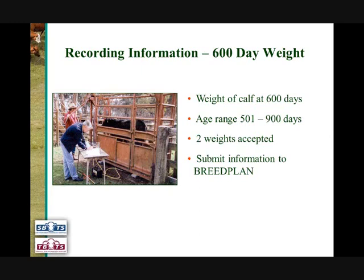While ideally one 600 day weight would be perfectly adequate, in some cases seed stock producers may collect up to two different weights in this age range to improve the accuracy of the 600 day weight EBVs. All 600 day weight information collected by seed stock producers is submitted directly to the breed plan office.